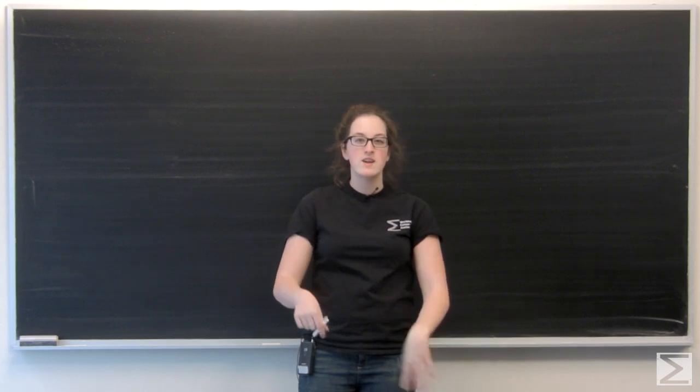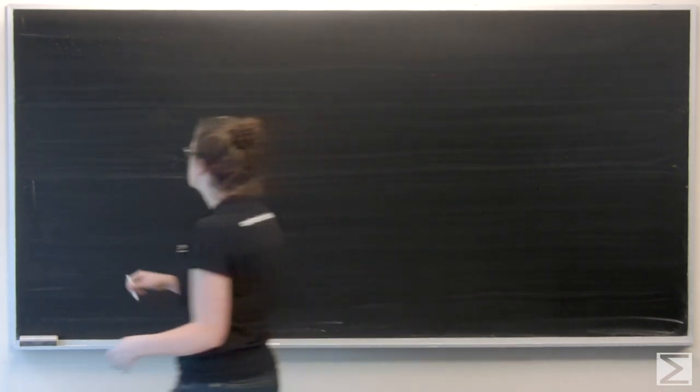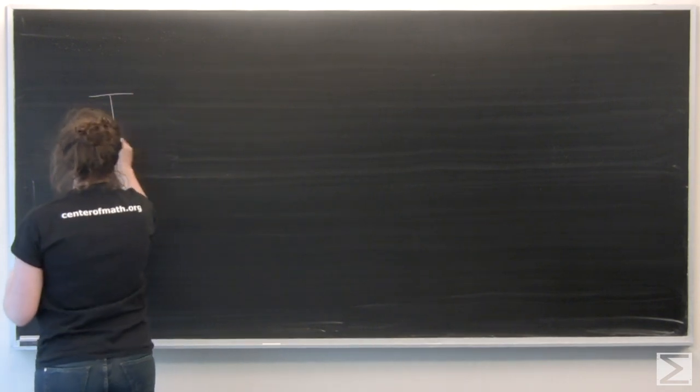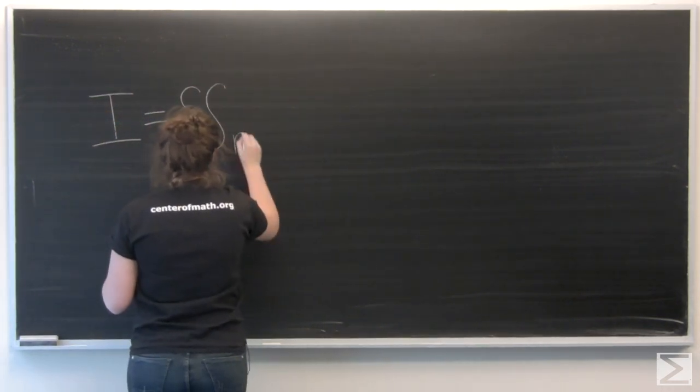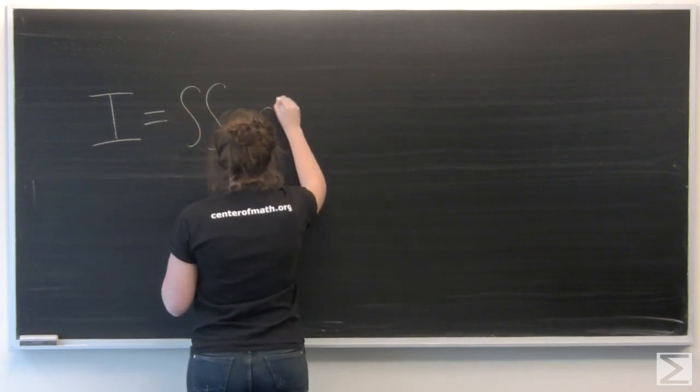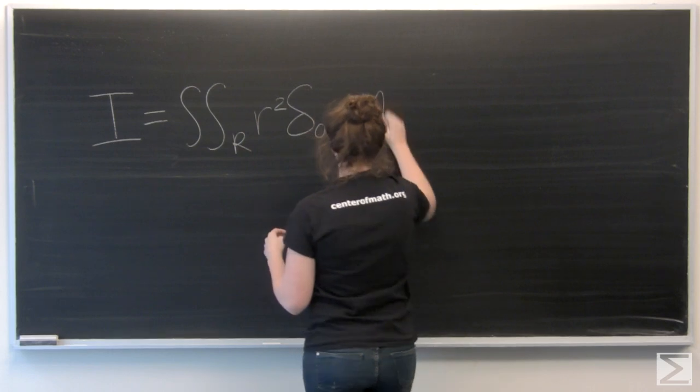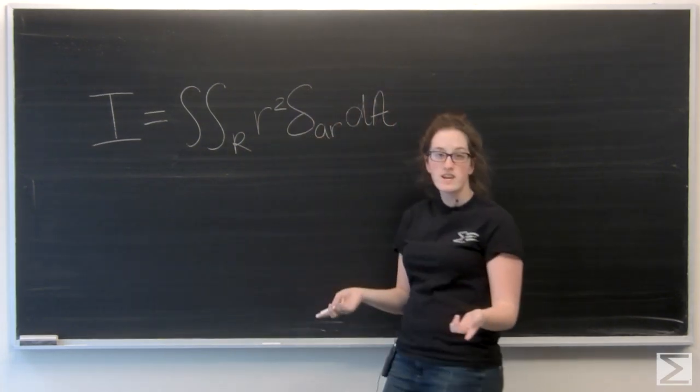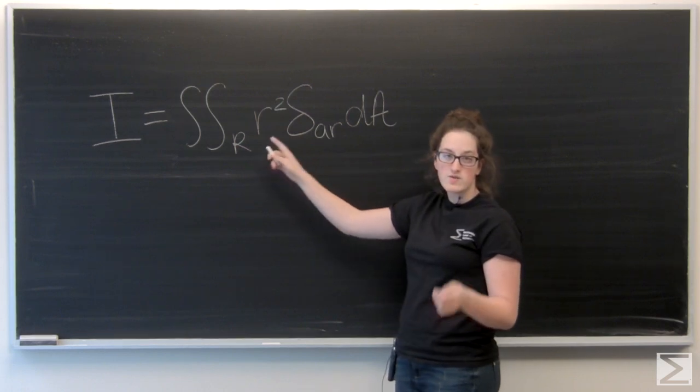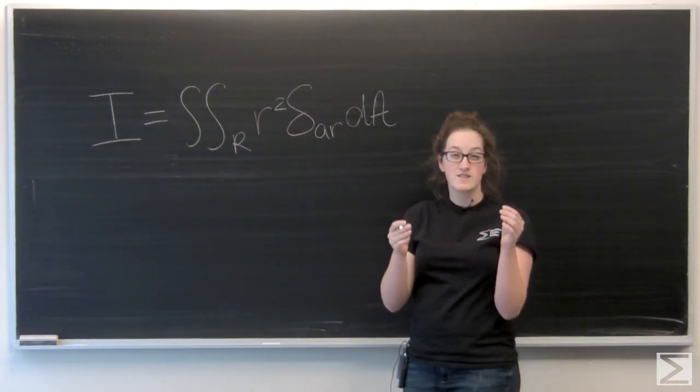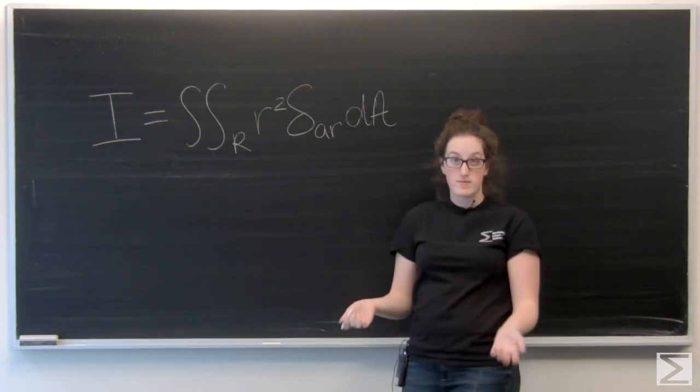So let's recall how to find moment of inertia in the xy plane. We're looking at a double integral over the given region and we're integrating r squared, which is the distance to the axis of rotation, times the area density and we're integrating with respect to area.